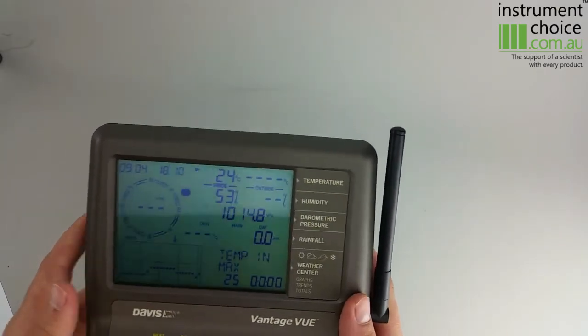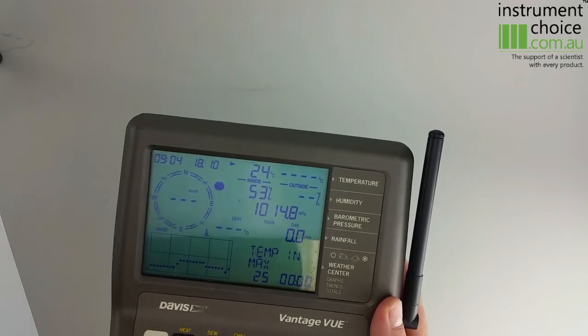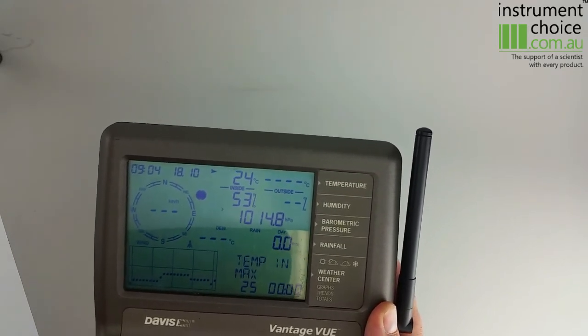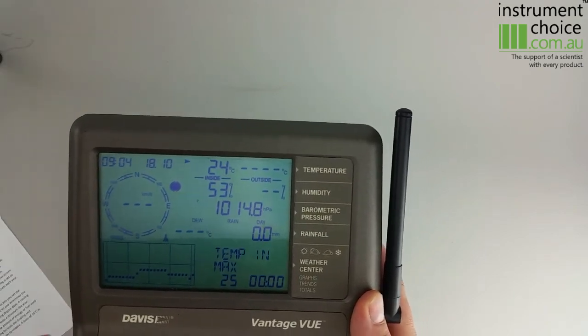So that's the basic setup of your Davis Vantage Vue console. If you have any questions, feel free to give one of us a call on 1300 737 871, or feel free to email us at customer-service at instrumentchoice.com.au. Thanks for watching. Have a good day.